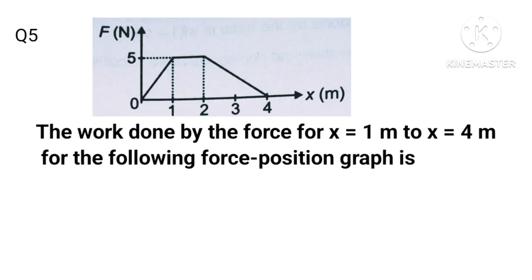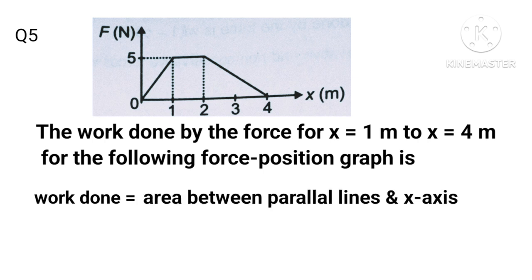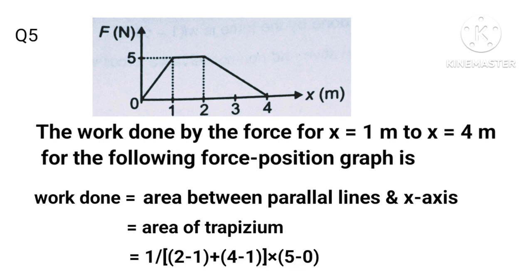Find the work done by the force from x = 1 meter to x = 4 meters for the given force-position graph. Work done equals area between curve and x-axis, which is the area of trapezium = ½(sum of parallel sides) × height = ½[(2-1) + (4-1)] × (5-0) = ½ × 4 × 5 = 10 J.